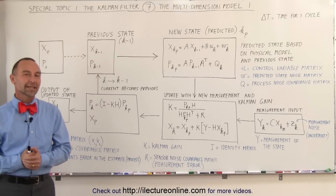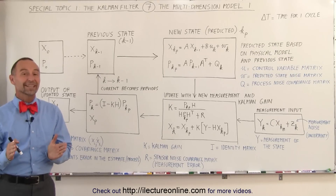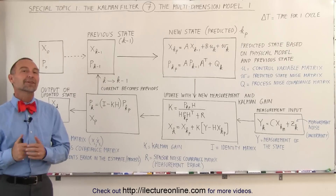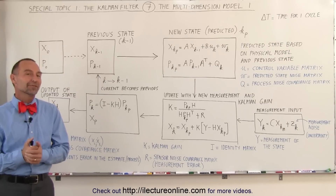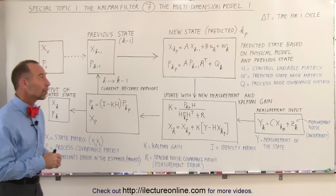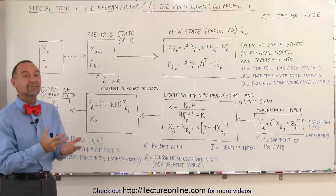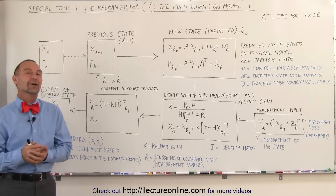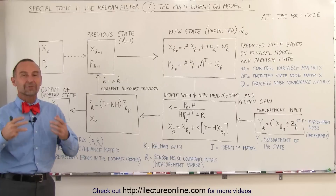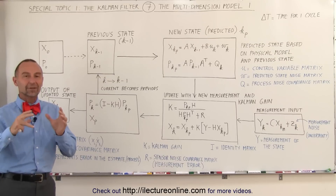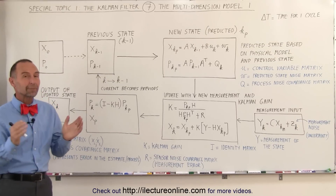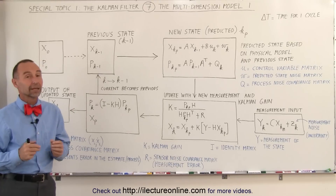Welcome to ElectronLine. Now that we've seen a very simple, straightforward, one variable example of the Kalman filter, we're now ready to tackle what we call the matrix format of a Kalman filter. The matrix format means that the information we gather and calculate through the Kalman filter will now be placed into a matrix format.